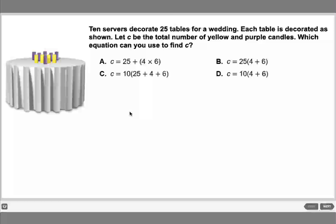Servers decorate 25 tables for a wedding. Each table is decorated as shown in the picture. We need to find the total number of yellow and purple candles — which equation can you use to find c? We have four choices here.